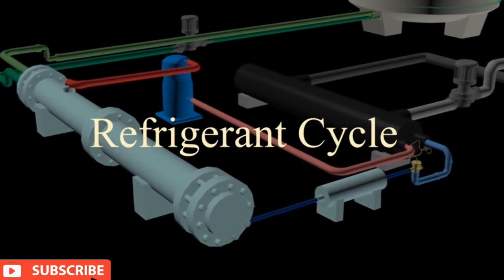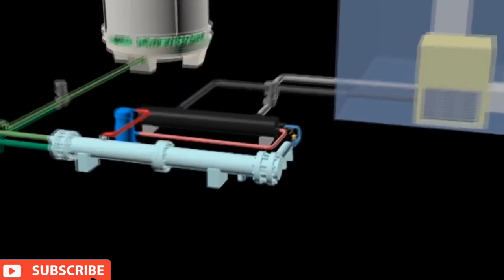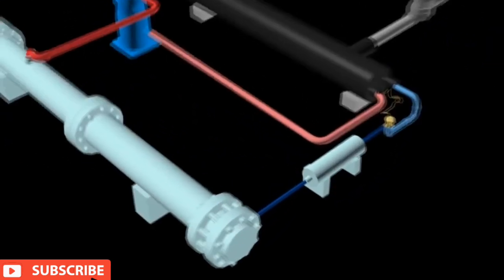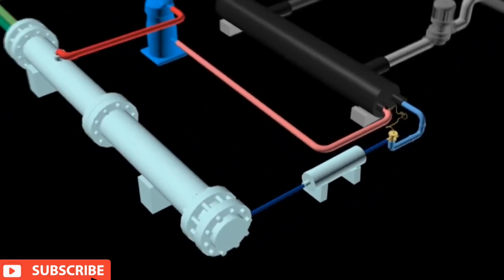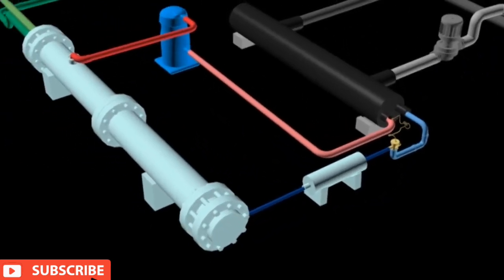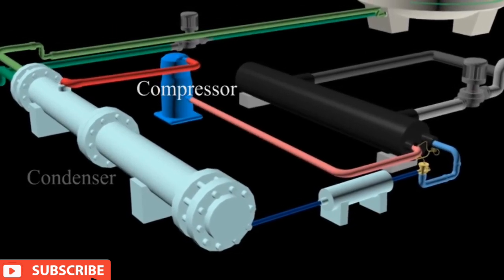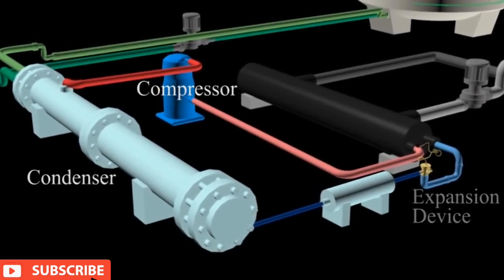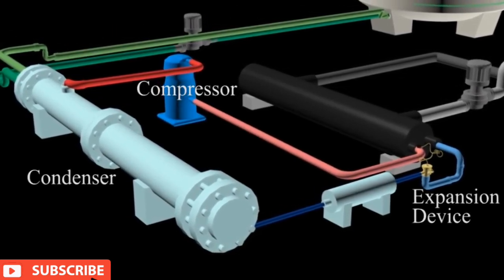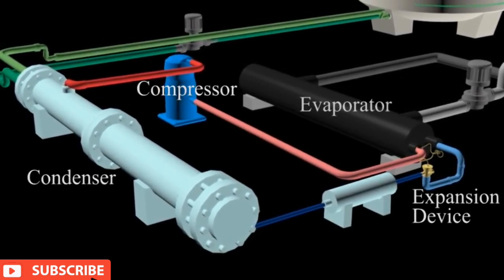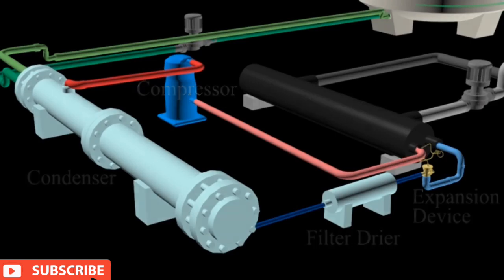Refrigerant cycle. The refrigerant cycle consists of four basic components: compressor, condenser, expansion device, and evaporator. An additional component called a filter dryer is also included in the system.